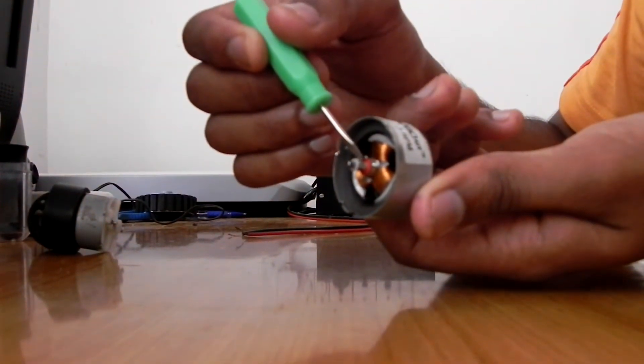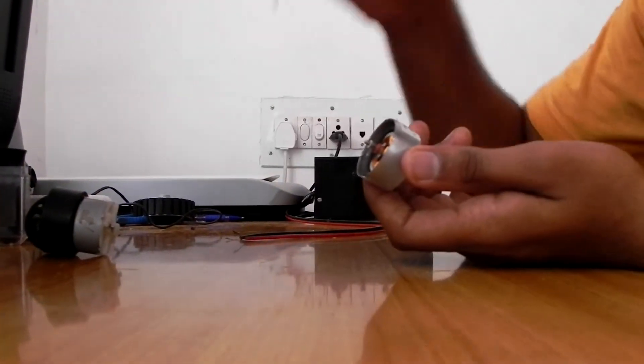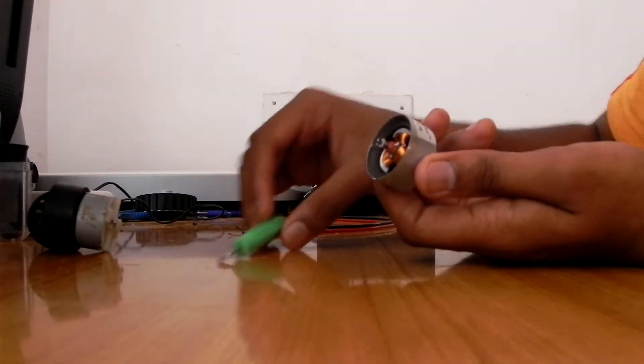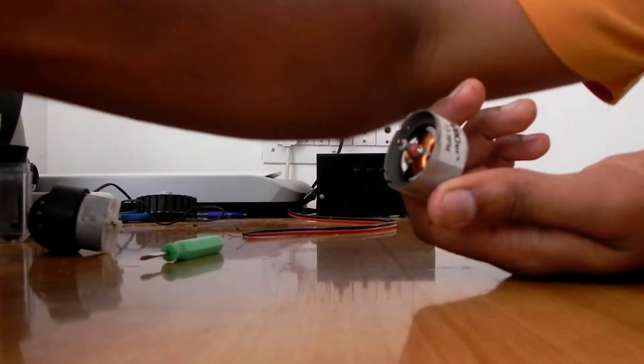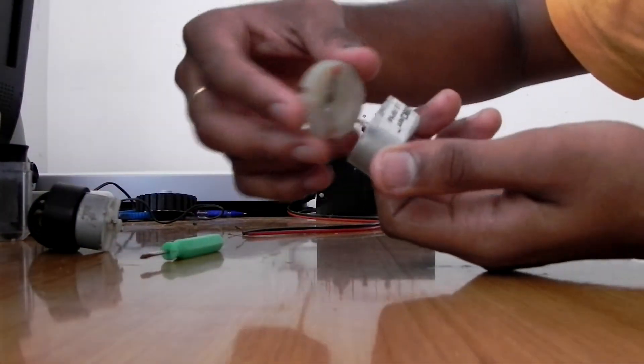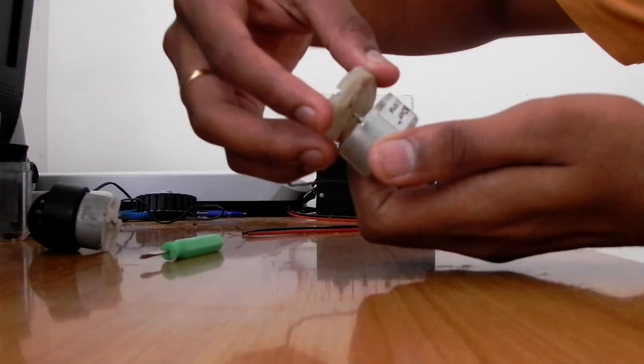The most important part of the motor is this commutator, because it maintains the direction of the current in only one direction. It has a split in between which is connected to the carbon brush in this fashion.